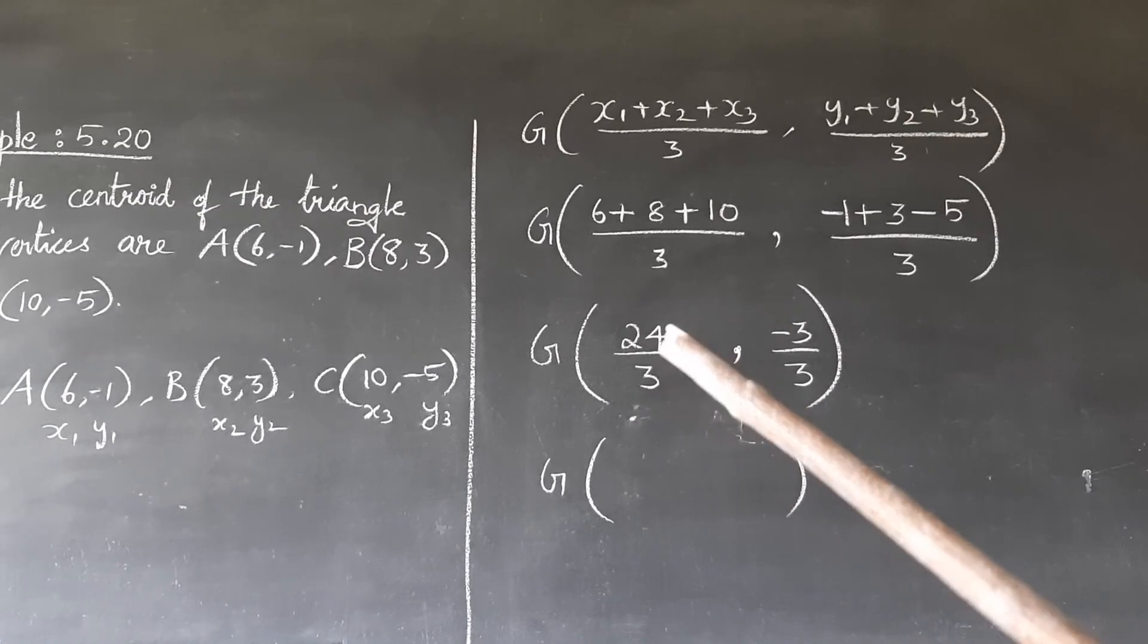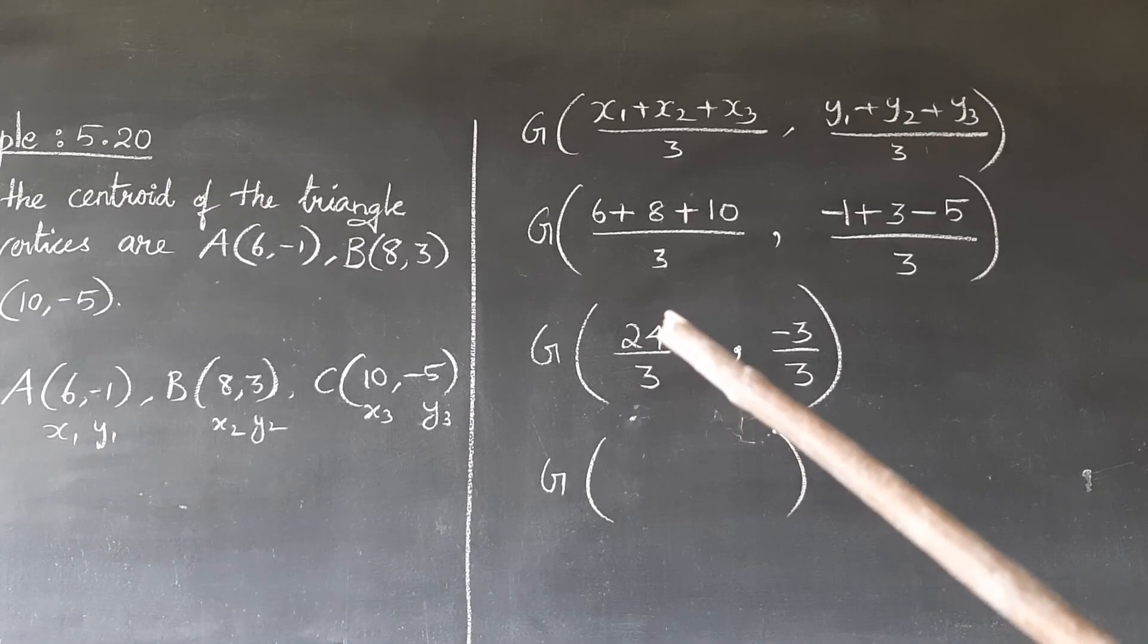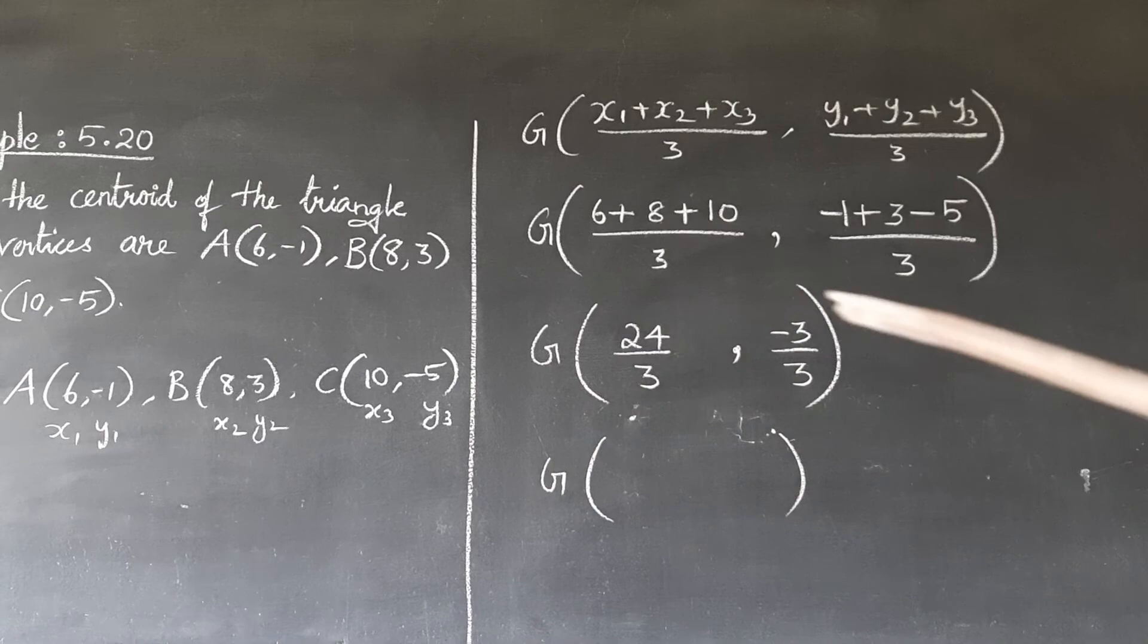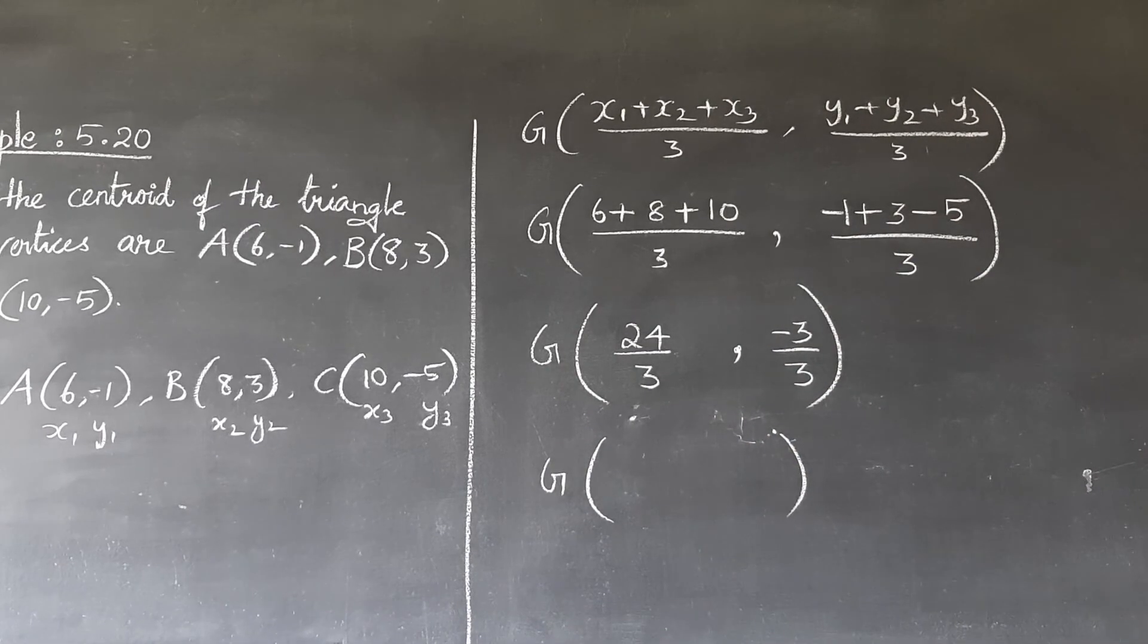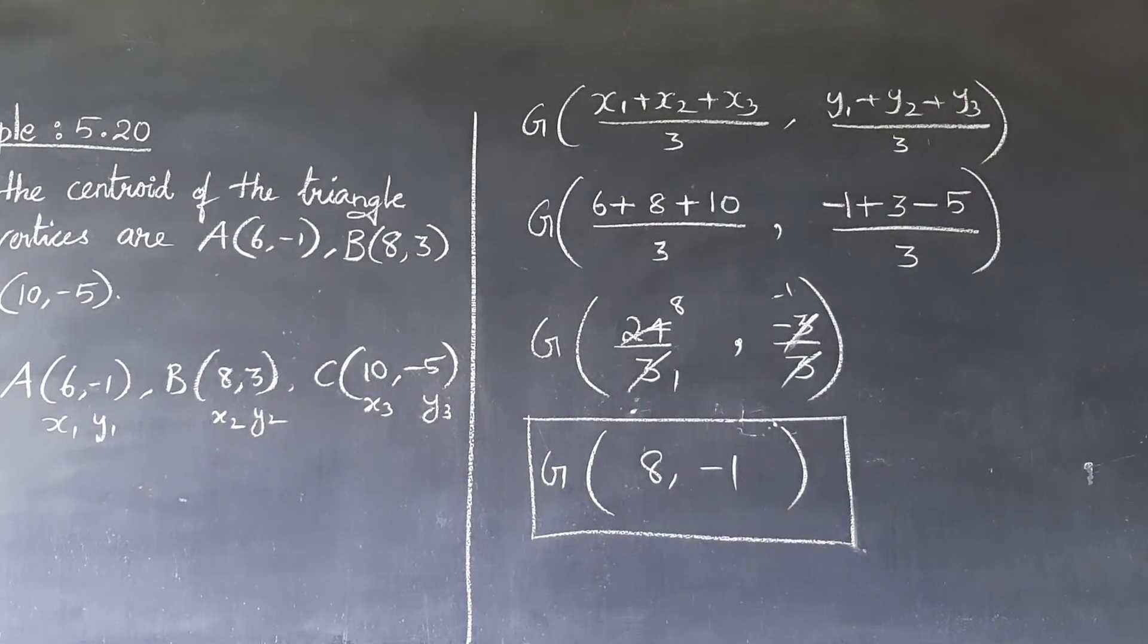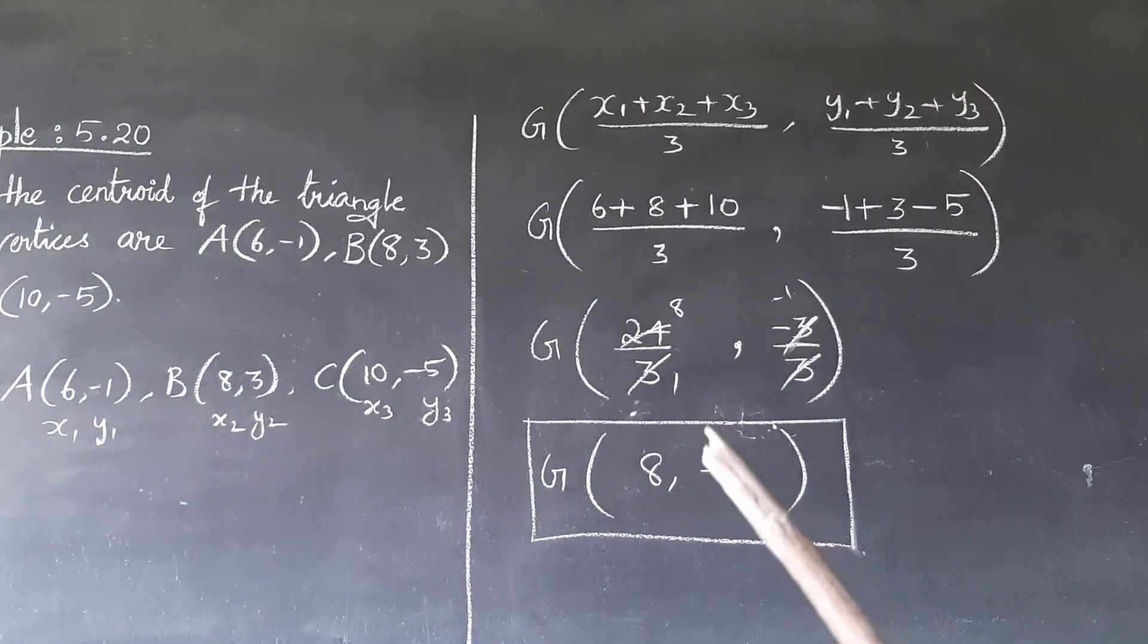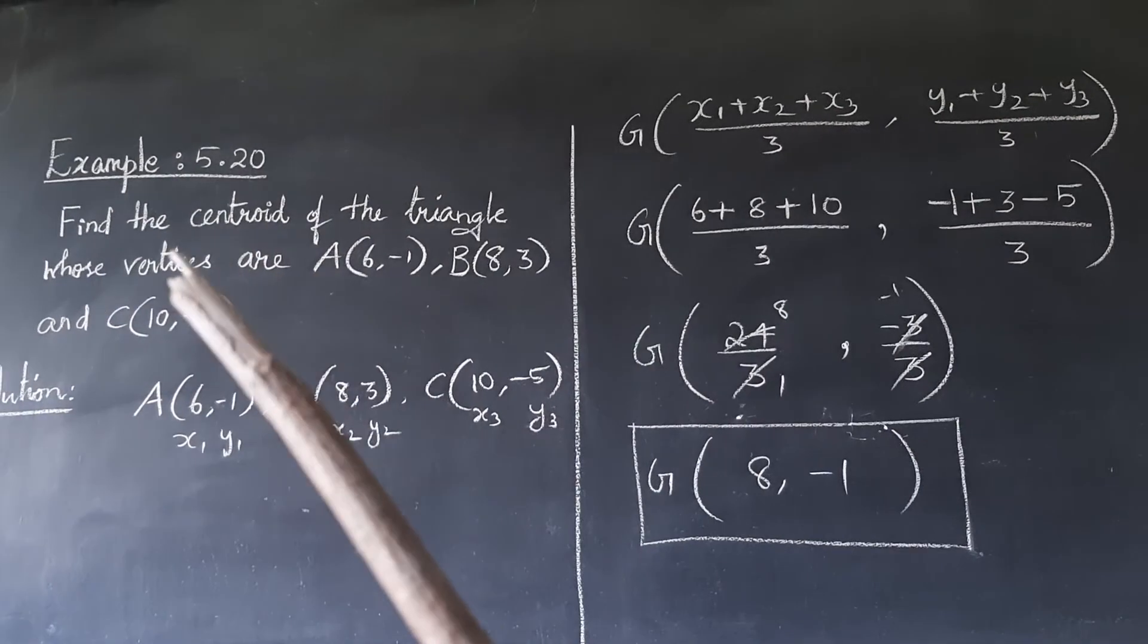-6 plus 3 is -3. Okay, -3 by 3. 3 ones are 3, and 3 eights are 24. So here 3, 3 cancel - 1 remains. So the answer is (8, -1). And this is the answer for the question.